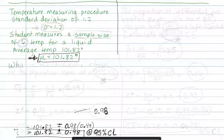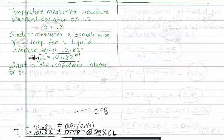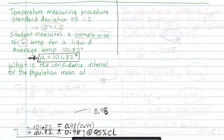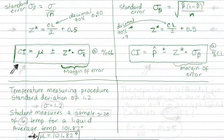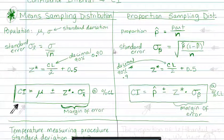The question would be what is the confidence interval for the population mean at a 95% confidence level. Now we're working with these notes. We're working with this because it's about averages. If it was about proportions we would be working with the other side, but it's about an average temperature so we have to calculate a confidence interval using the equations on this side.